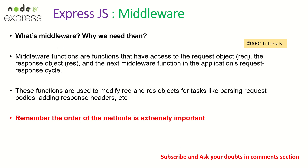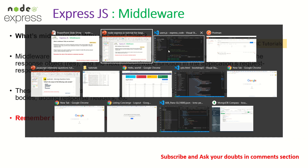Now let's talk about middleware — that's the focus topic of today. Middleware functions are nothing but functions which have access to the request object and the response object, and the next middleware function. That is basically the method which is used to modify the request and response objects for tasks like parsing request bodies, adding response headers, etc. This is more of a theoretical explanation, but when you go to interviews or talk about your projects, someone will ask you what middleware is.